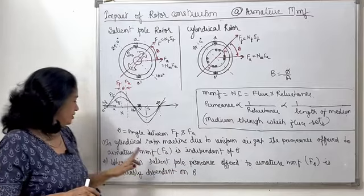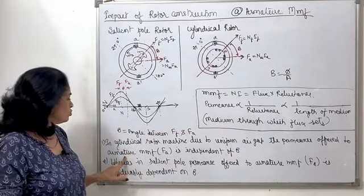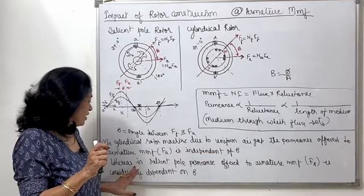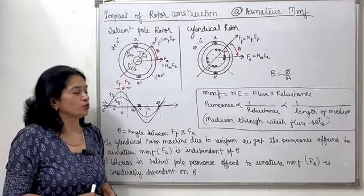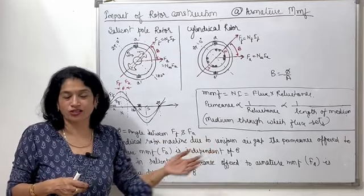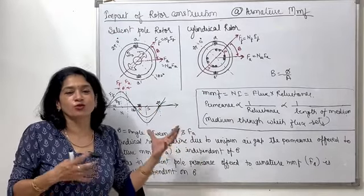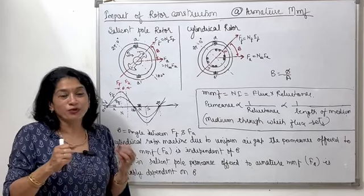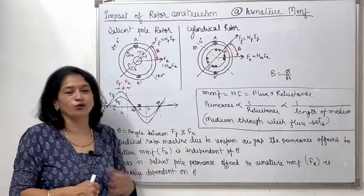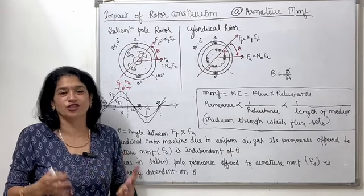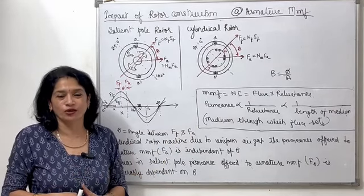So, non-uniform air gap affects the armature MMF quantity, while uniform air gap does not cause a change — FF would be the same everywhere. In cylindrical rotor machines, due to uniform air gap, the permeance or reluctance offered to armature MMF is independent of theta; in salient pole machines it is dependent on theta. This is the base for understanding armature reaction in salient pole machine models. Please like the video, subscribe to the channel, suggest it to your friends, and go into the depth of electrical engineering concepts. Thank you.